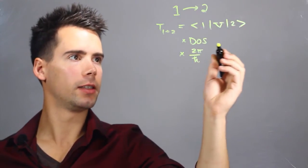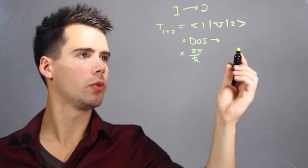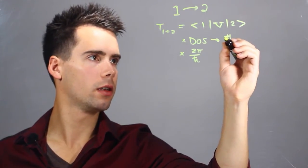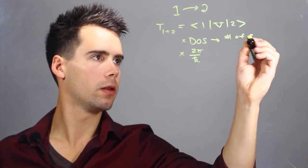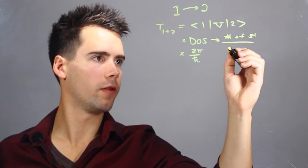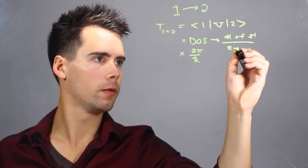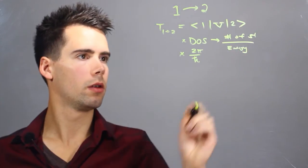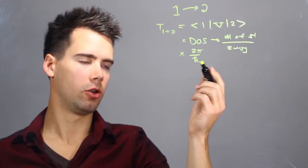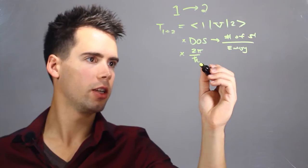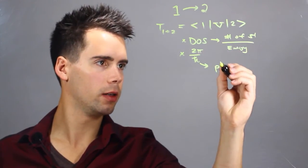The next one is the density of states, and this is simply the number of states per unit energy level. And the last one is simply 2π over h-bar. H-bar is Planck's constant.